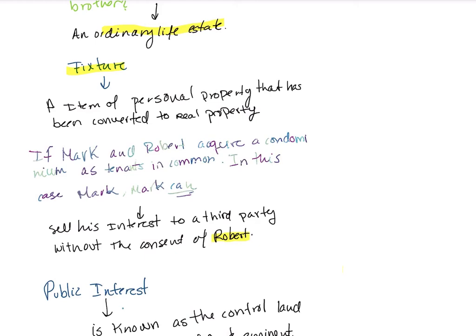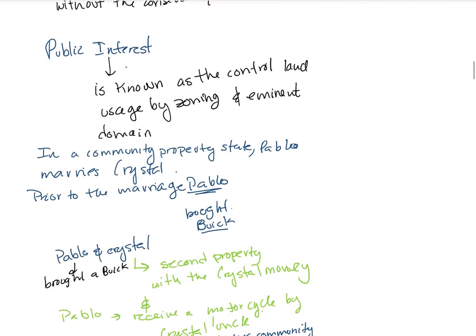Public interest is associated with the government's control of land usage through zoning and eminent domain. Public interest means that a government-controlled area will be regulated, with the purpose of the land serving the community.